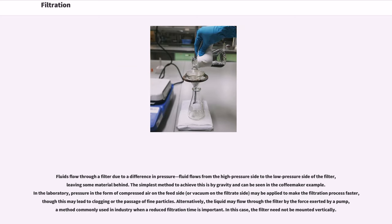In the laboratory, pressure in the form of compressed air on the feed side, or vacuum on the filtrate side, may be applied to make the filtration process faster, though this may lead to clogging or the passage of fine particles. Alternatively, the liquid may flow through the filter by the force exerted by a pump, a method commonly used in industry when a reduced filtration time is important. In this case, the filter need not be mounted vertically.